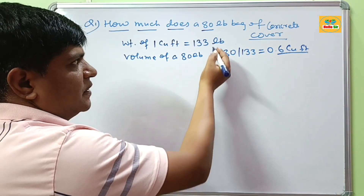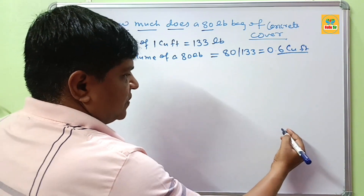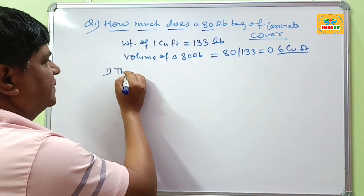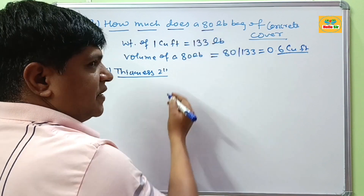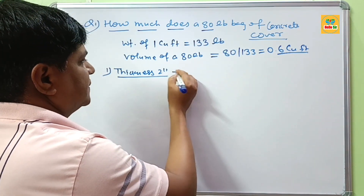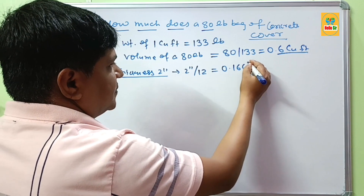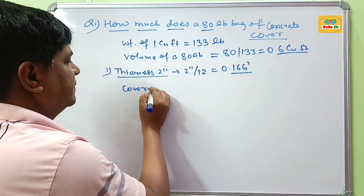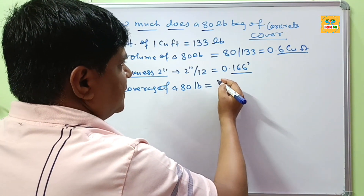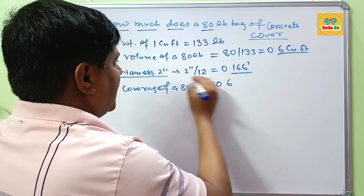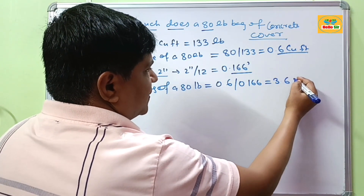Now, to calculate how many square feet are covered by one 80 lb bag of concrete, suppose your thickness is 2 inches. If you want to convert 2 inches into feet, this will be about 0.166 feet. The coverage of an 80 lb bag of concrete in square feet is found by dividing the volume of 0.6 cubic feet by the 2-inch thickness of 0.166 feet, which comes out to about 3.6 square feet.